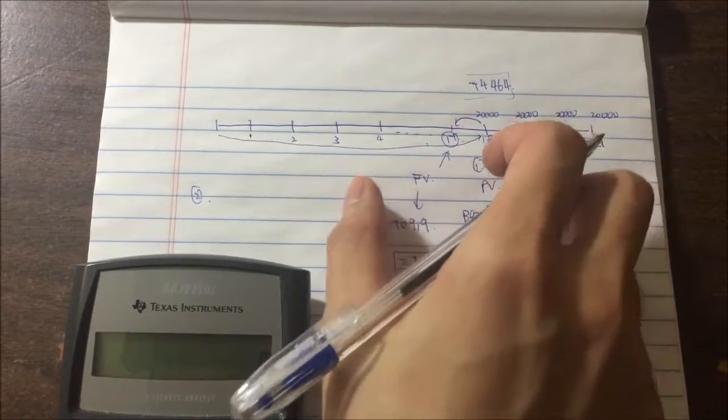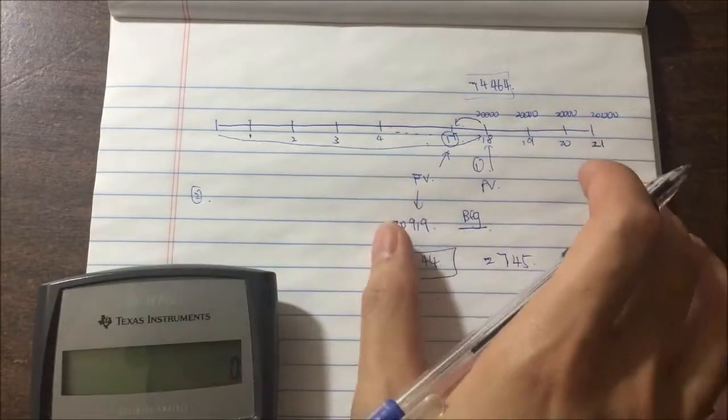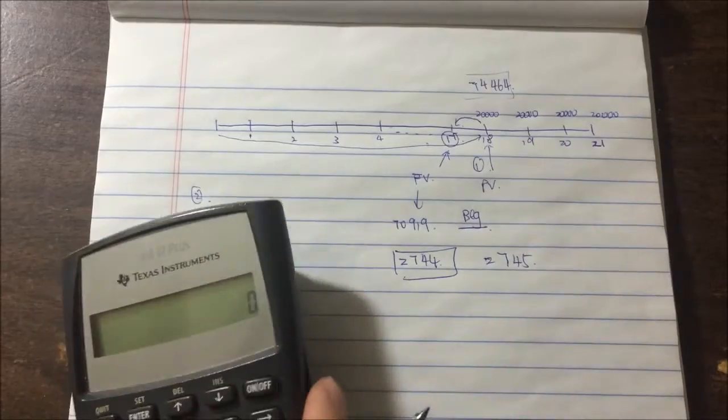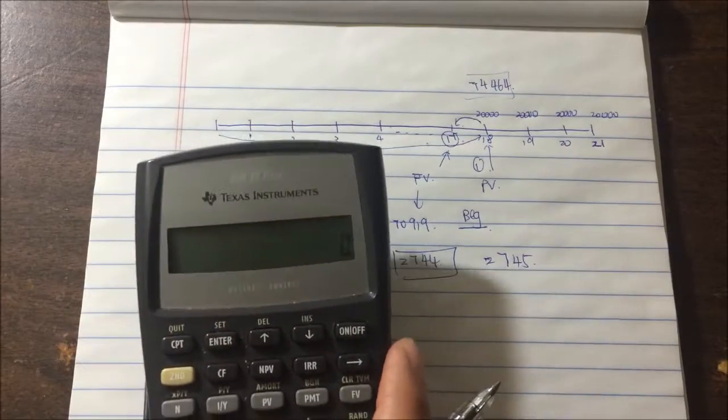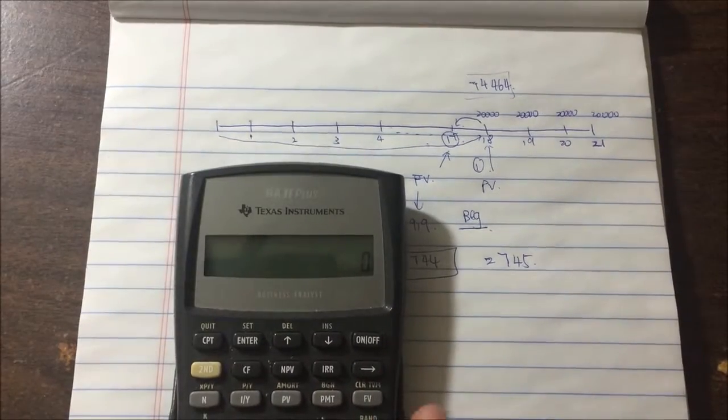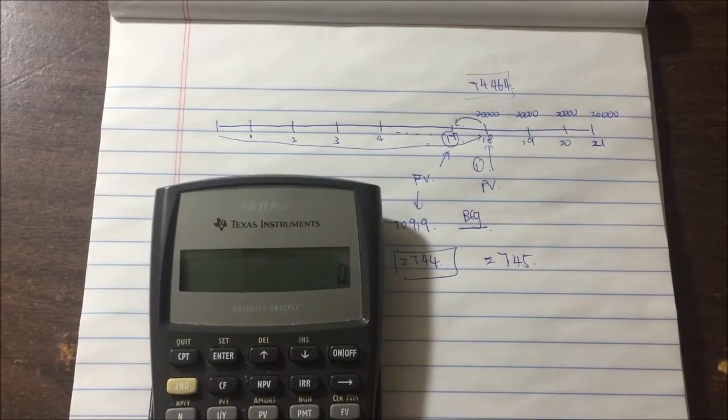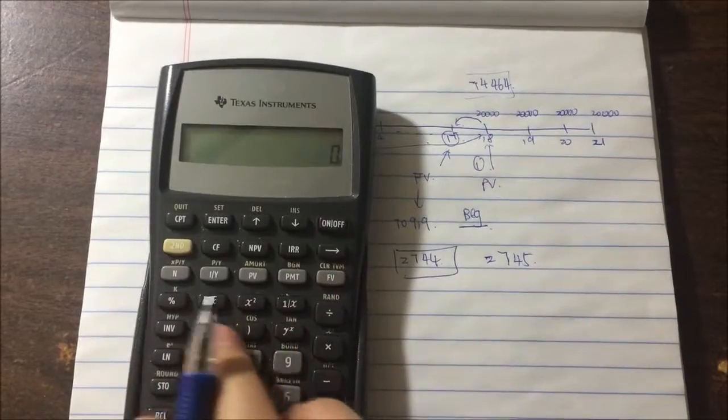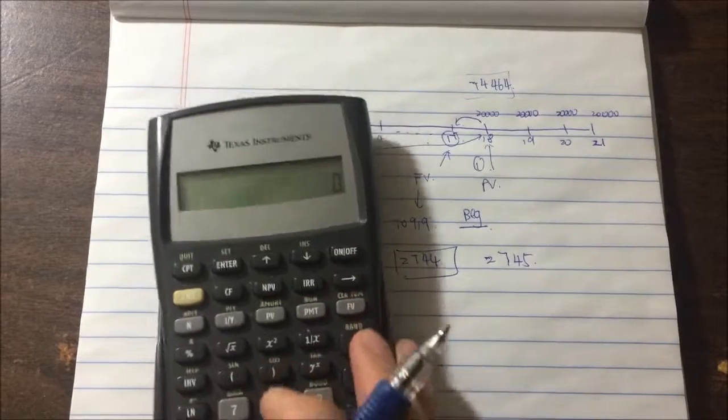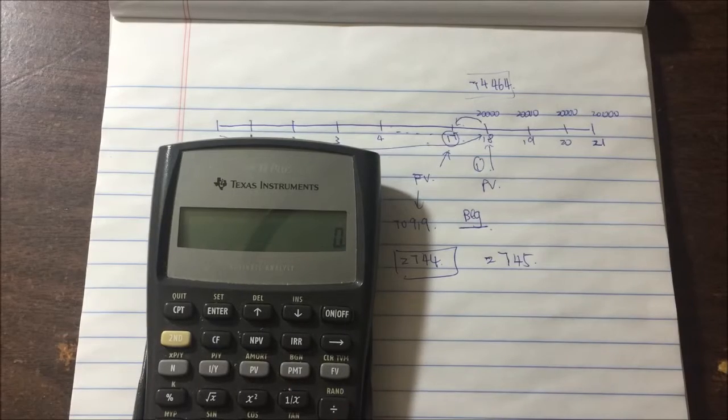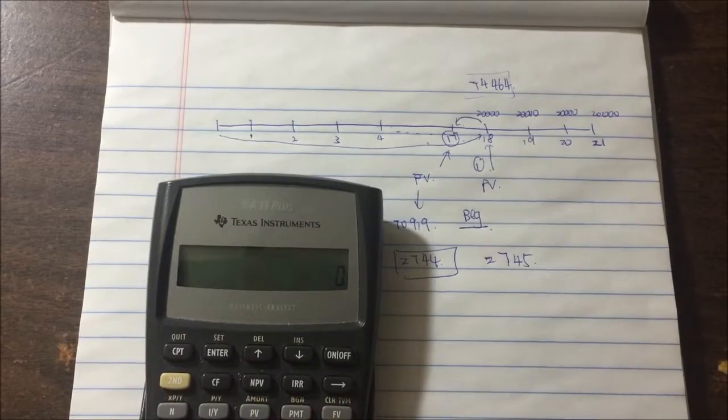If you break down the problem into two distinct problems within the same problem set, all you need is to know how to use the BA II Plus calculator. Make sure you know how to use the annuity function on your calculator, whether it's BA II Plus or any other HP calculator you're using. Hopefully this helps.